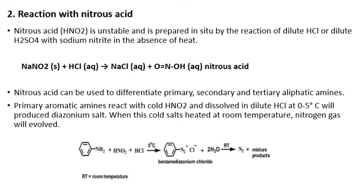Primary aromatic amines react with cold HNO₂ dissolved in dilute hydrochloric acid at 5 degrees centigrade. This will produce a diazonium salt, such as benzene diazonium chloride. When this cold salt is heated at low temperature, nitrogen gas will evolve.